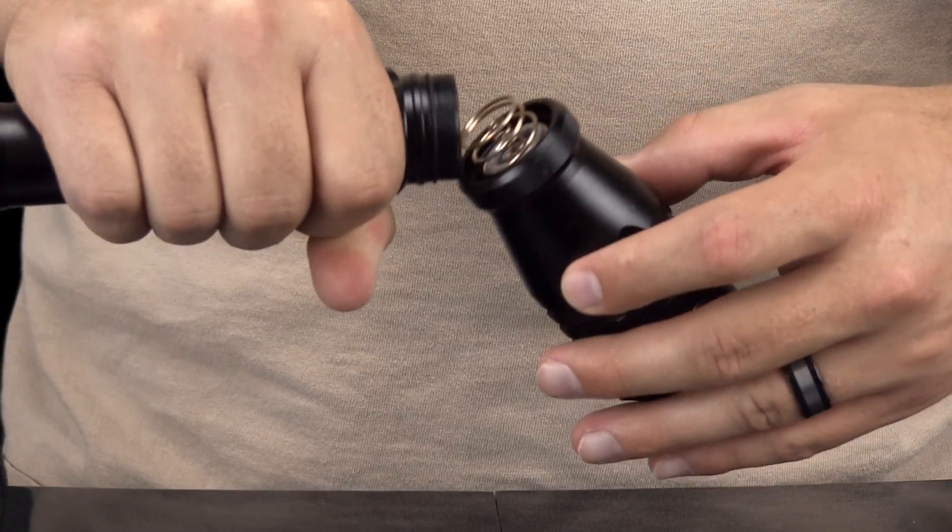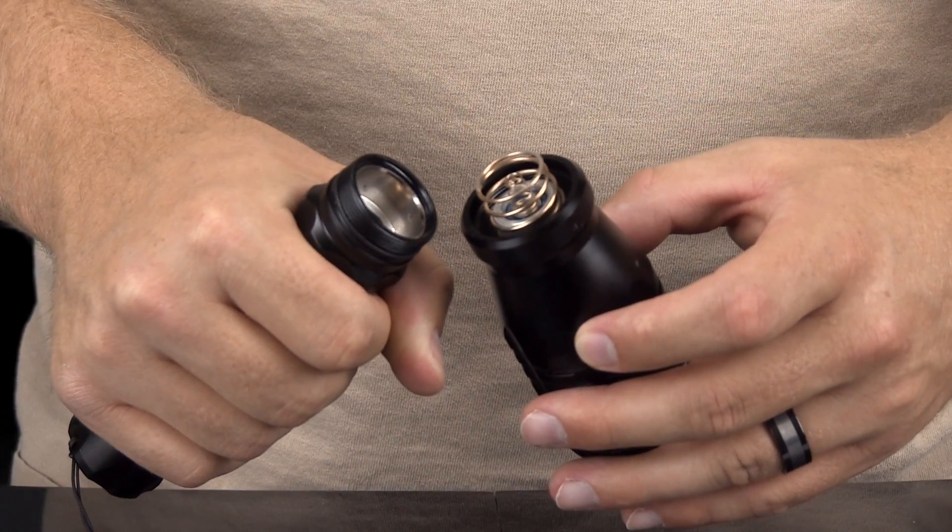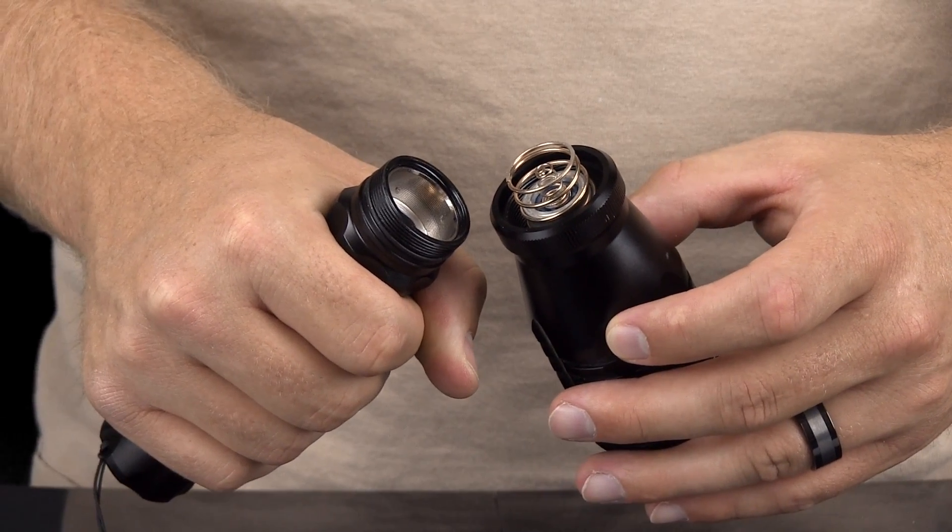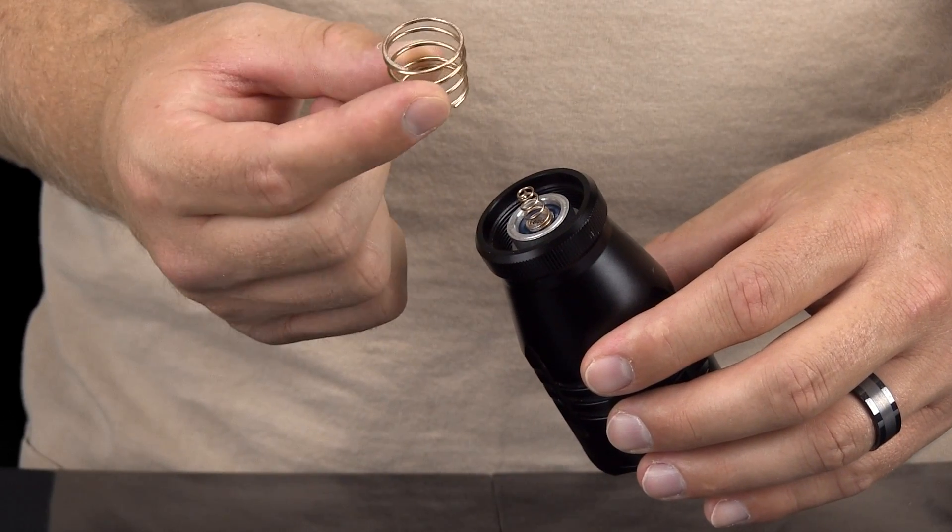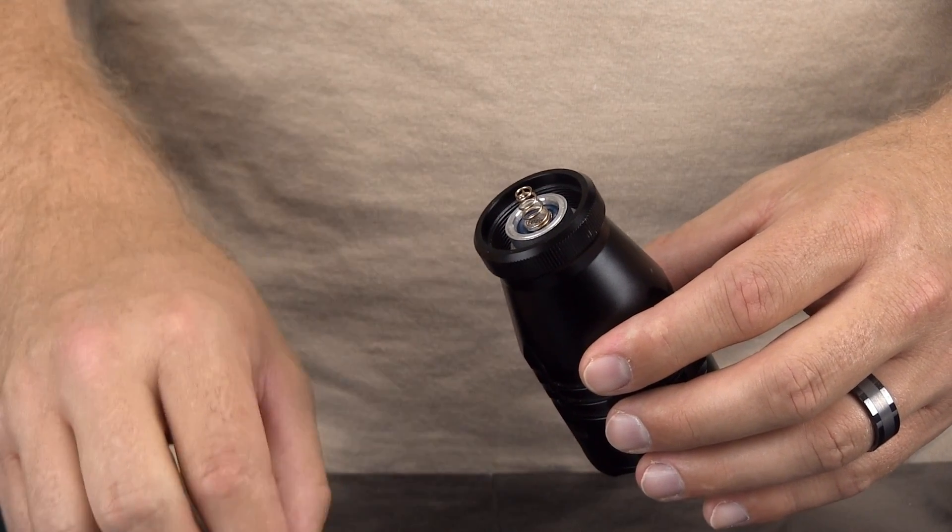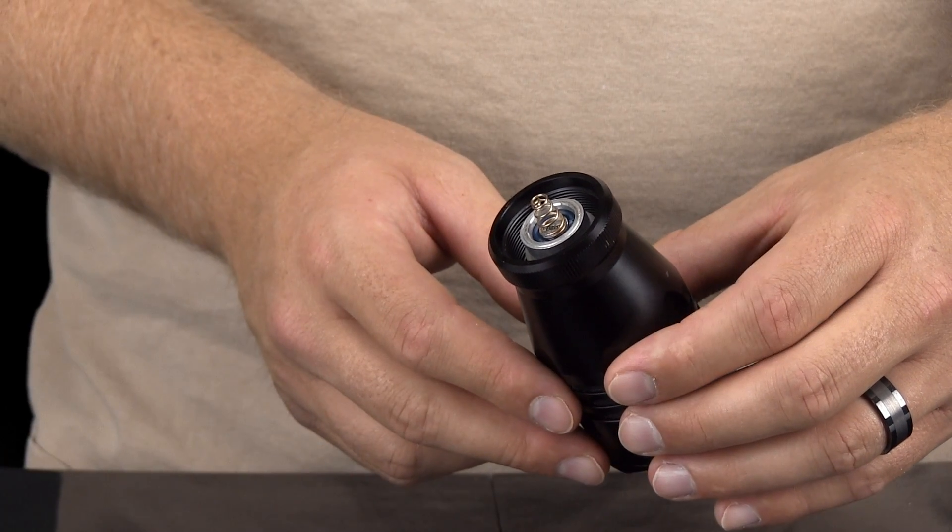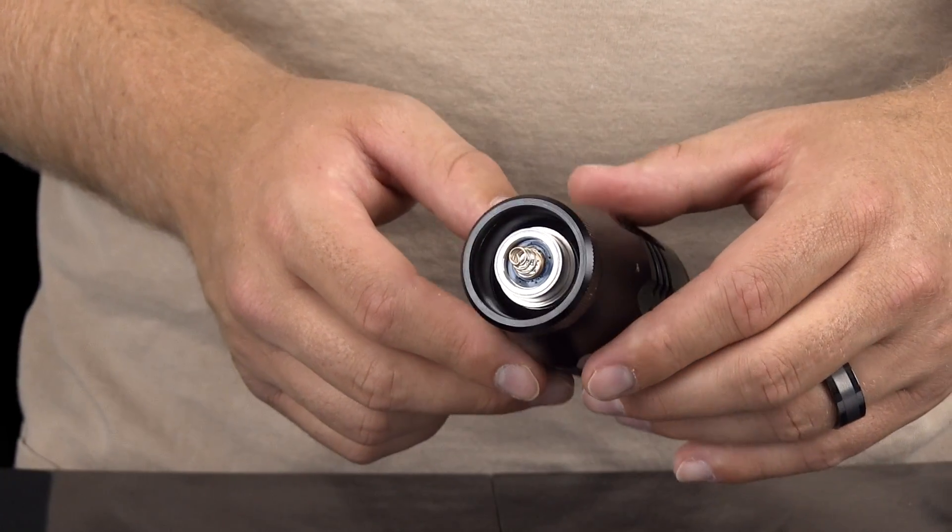Once the bezel is removed from the light housing, you will see a contact spring which should be loosely attached to the LED. Remove the spring from the LED. Be careful not to lose this spring as your light will not function without it.